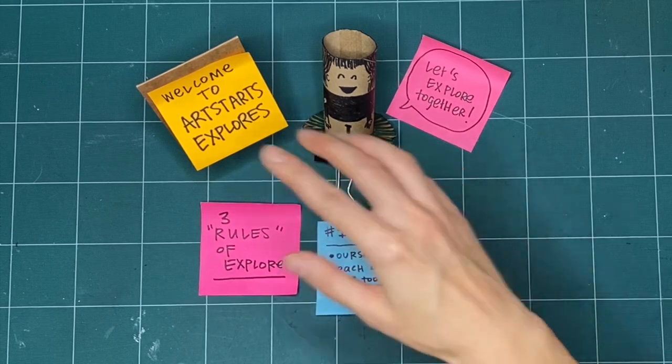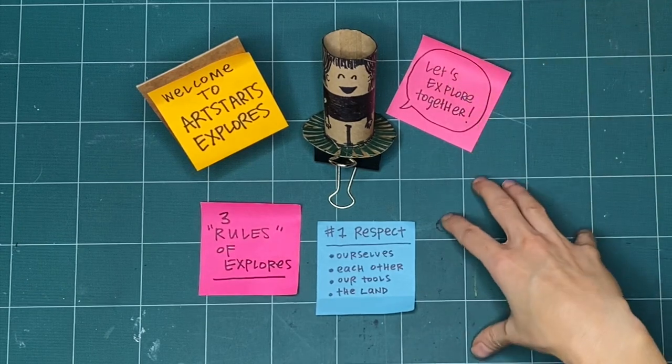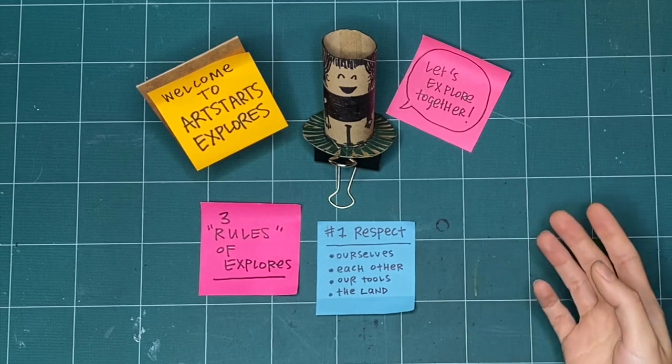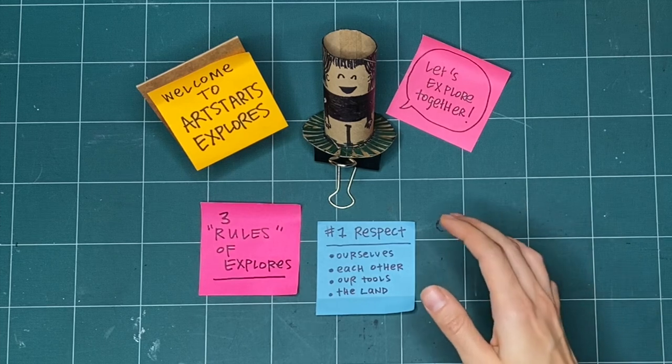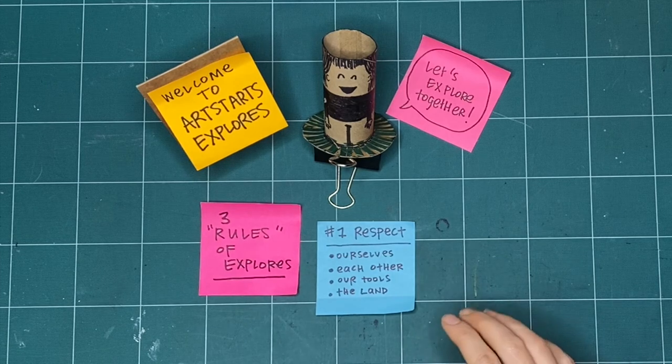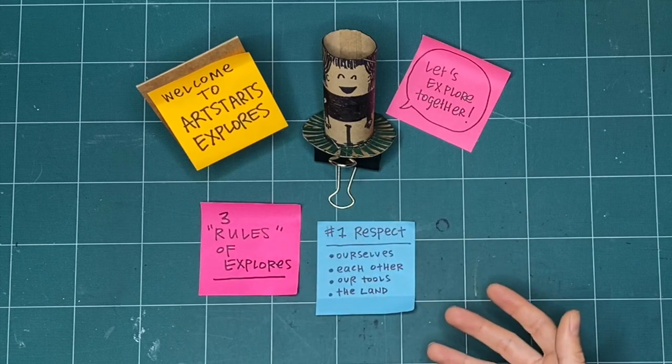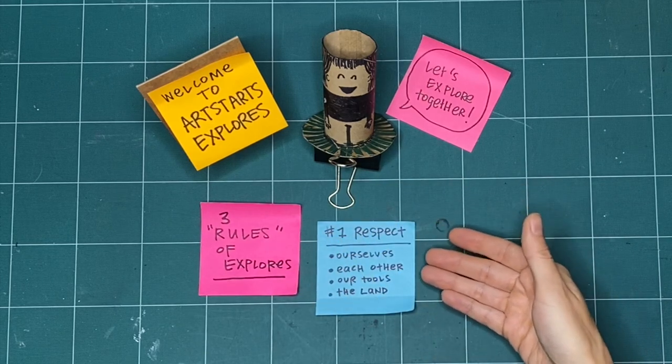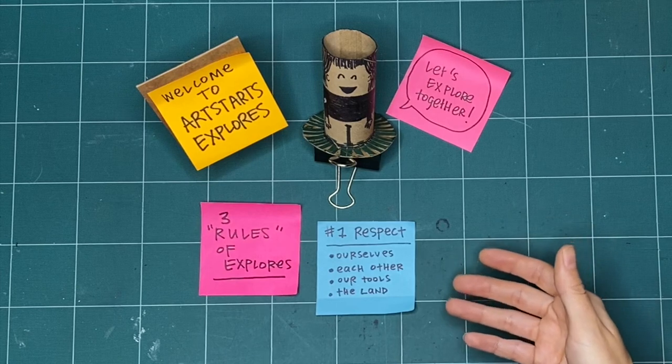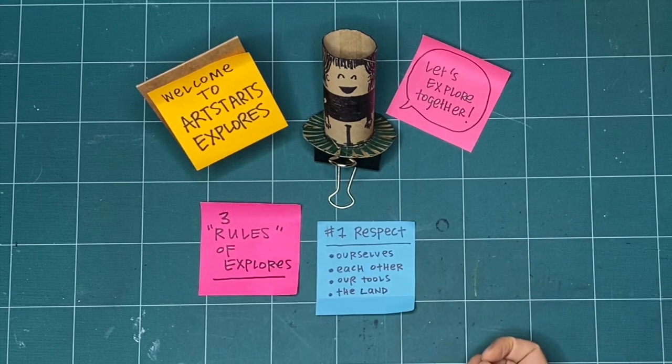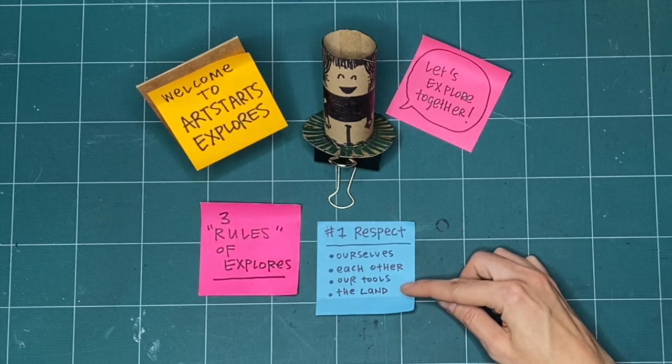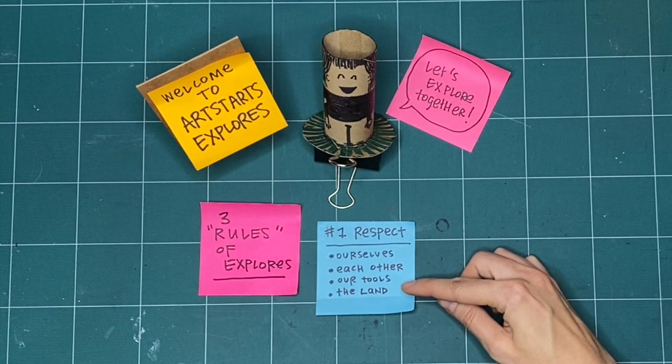We can also practice respect by acknowledging the land. So this space that you see here is my studio space. And I'm on the stolen, or unceded, territories of the Musqueam, Squamish, and Tsleil-Waututh nations as an uninvited guest on these lands. One of the ways I practice respect is by acknowledging where I'm coming from and to be respectful of the lands, waters, and to the Indigenous people who are here and who have been here since time immemorial while I have access to these lands. You can practice respect by finding out the territories and lands where you are watching and making from today, and by being the best guest you can by respecting the host nations, the lands, and waterways where you live.